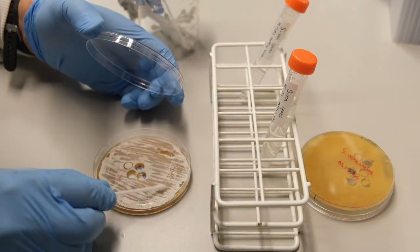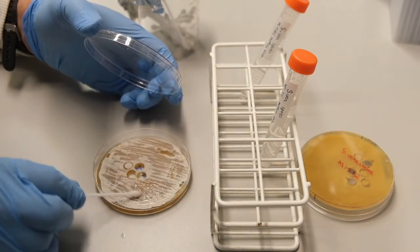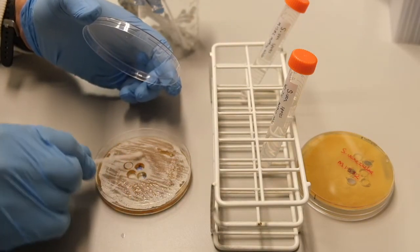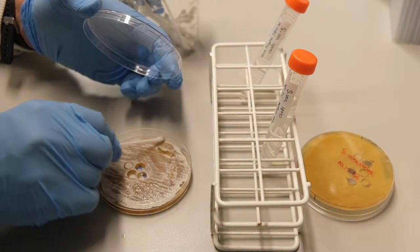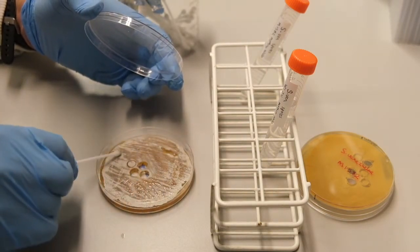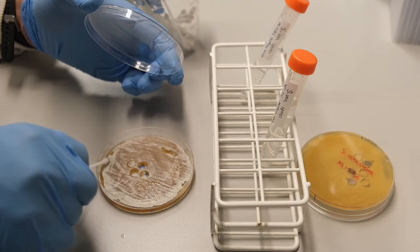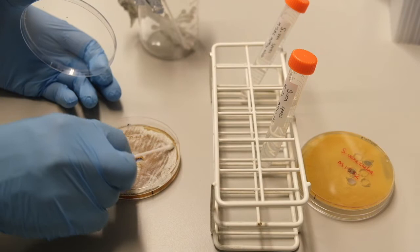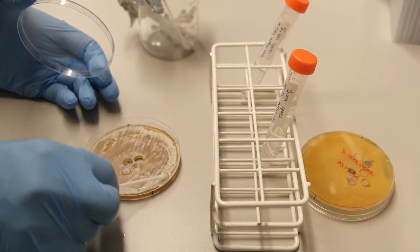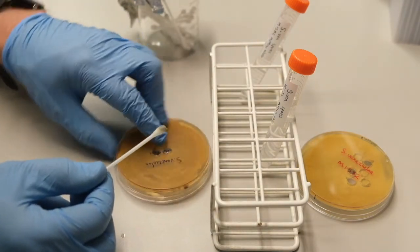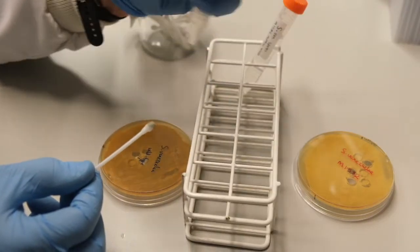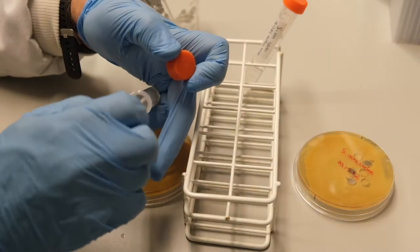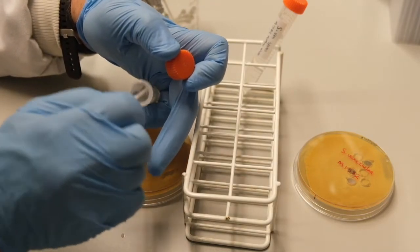The wet cotton bud can be used again to collect any remaining spores from the surface of the plate. The remaining collected spores can be added to our spore stock by dipping once more into the same solution of 20% glycerol.